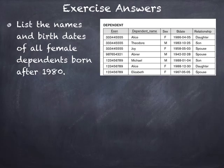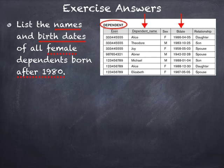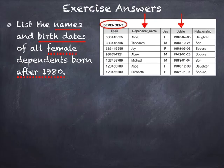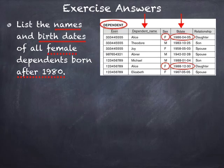I will go directly to the DEPENDENT table because all the information I need is there. The two attributes I need are birth date and dependent name. I have two conditions: females (sex = 'F') and birth date after 1980. For these conditions, I'll apply a selection on sex and birth date, then retrieve the two records that satisfy both conditions.